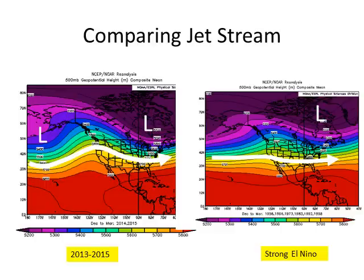Comparing the jet stream in the past couple of years — it's basically been missing us. But during El Niño, it cuts across Southern California into Texas and Florida. That's because of the tighter gradient between the warm atmosphere and warm ocean temperatures to the south and the polar jet stream to the north — they phase together and become more consolidated and directed across Southern California.